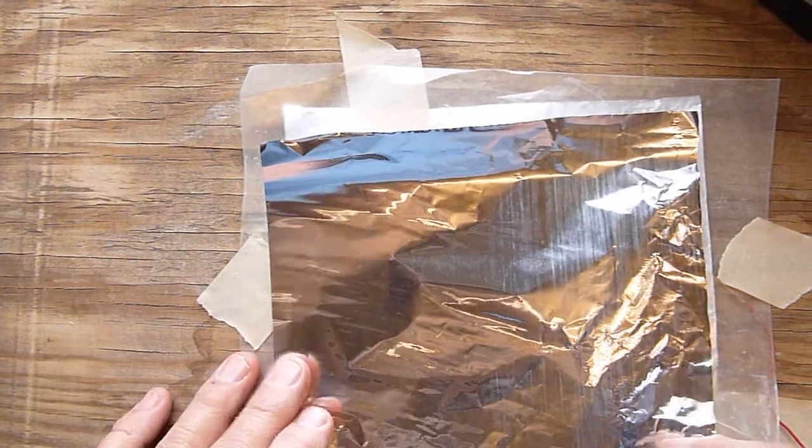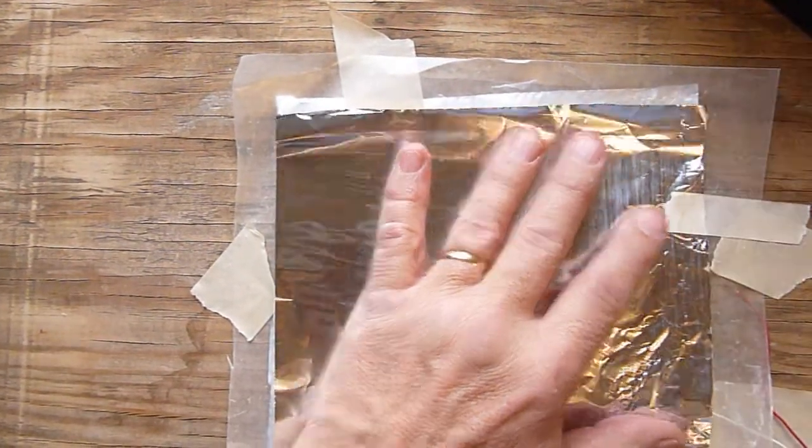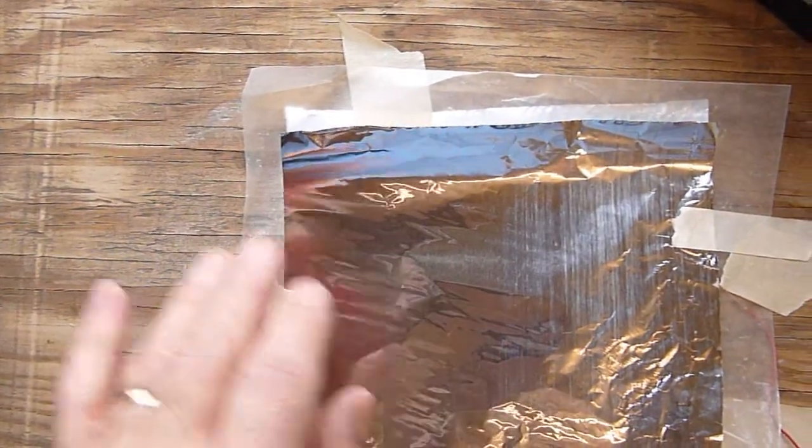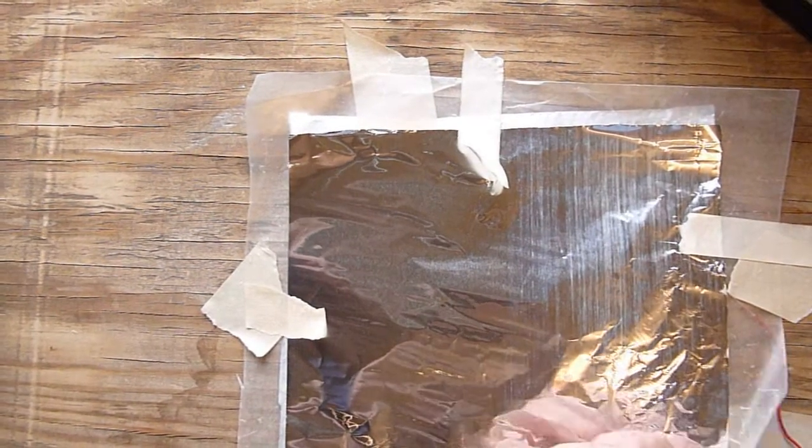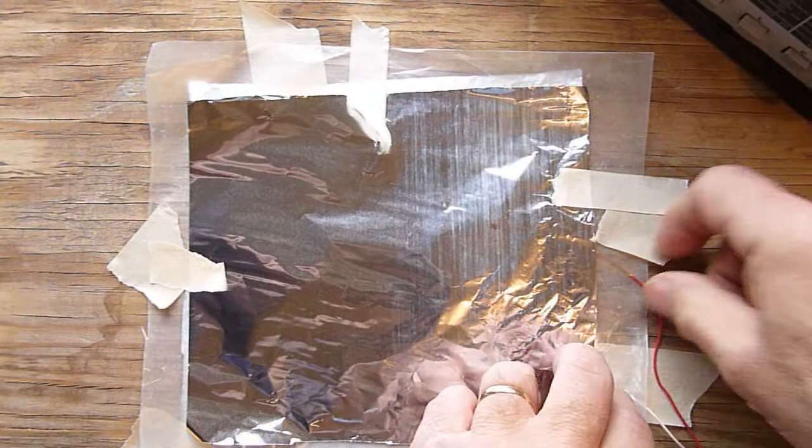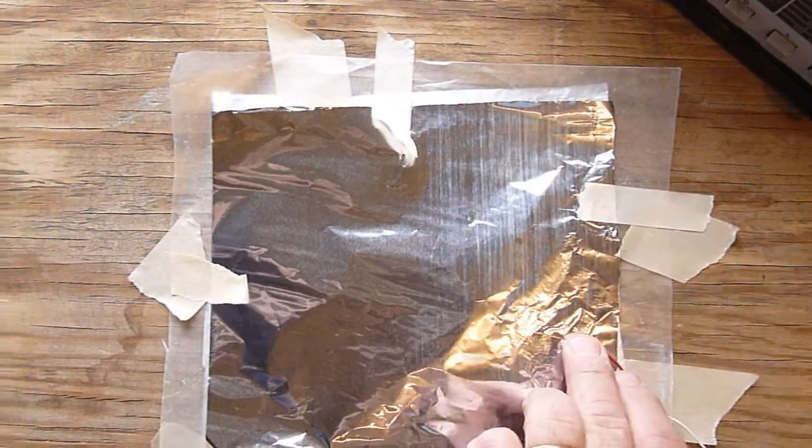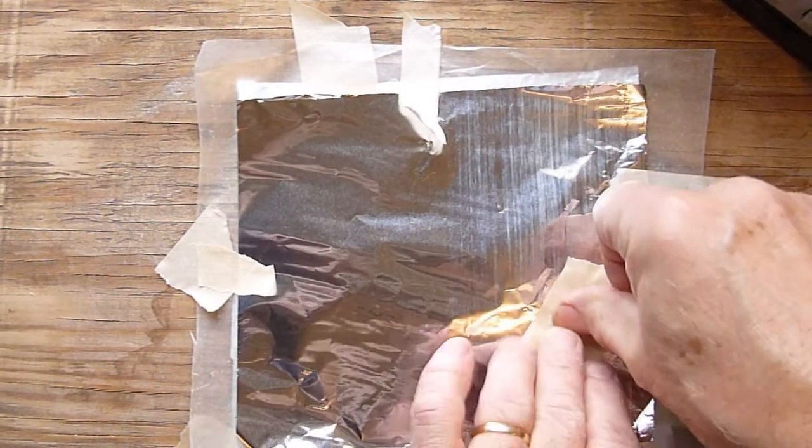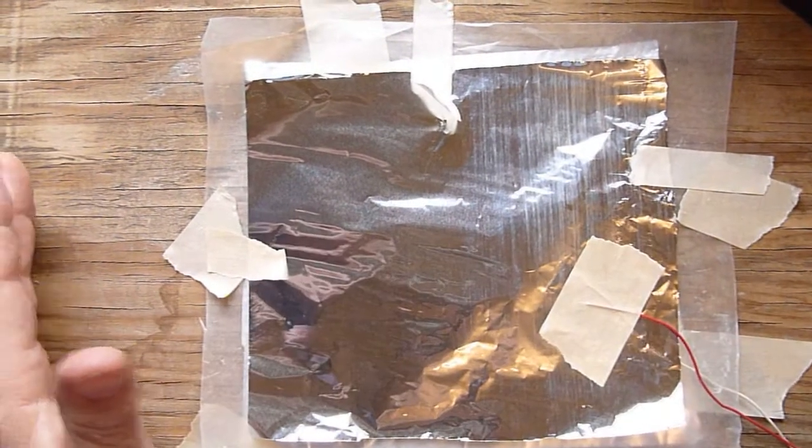Finally, we need another aluminum foil. We want to tape this down as well. We'll keep things in place. And then we want to tape another wire to the aluminum foil. We've got to make sure there's a good connection here by pressing down hard. That's our capacitor.